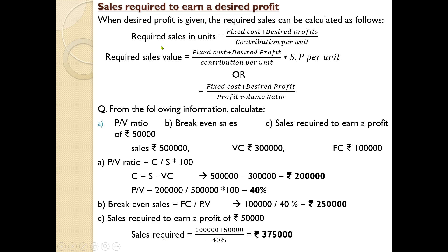The equation used is fixed cost plus desired profit divided by PV ratio — fixed cost is 1 lakh plus desired profit 50,000, totalling 1,50,000 divided by 40%, giving sales of Rs. 3,75,000. So the business has to sell goods for Rs. 3,75,000 in order to earn a profit of 50,000. This is how you have to deal with the various applicable cases.